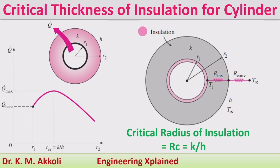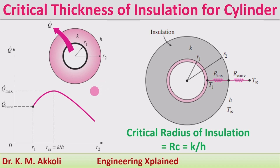Here we are going to provide insulation in order to reduce the rate of heat transfer. Particularly for small cables, wires, and small pipes, the critical thickness of insulation term is used. For small wires, cables, or cylinders, if you add insulation on the outer surface, up to the critical thickness the rate of heat transfer will go on increasing even though insulation is being added.